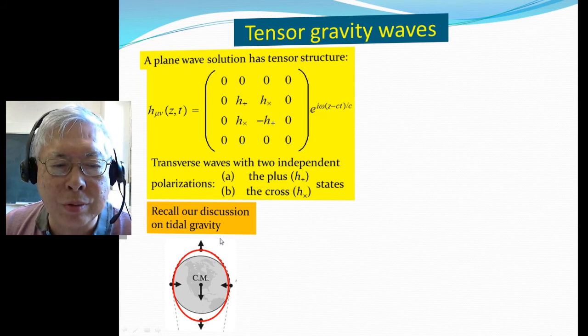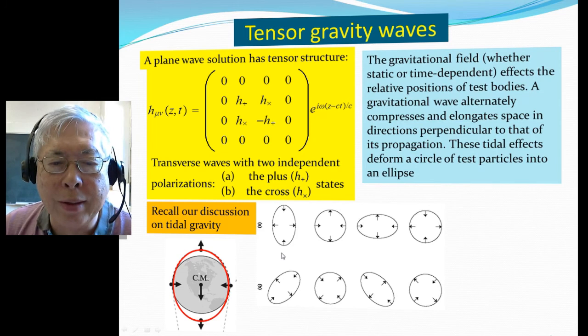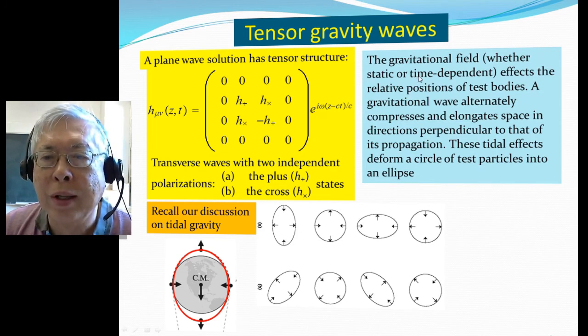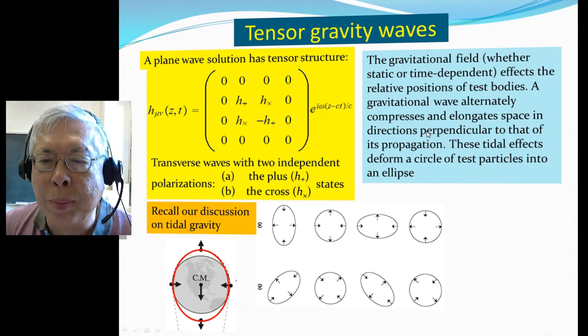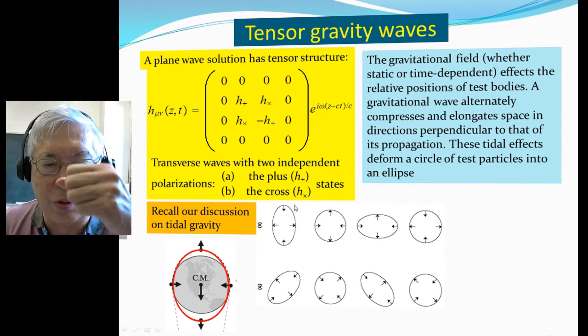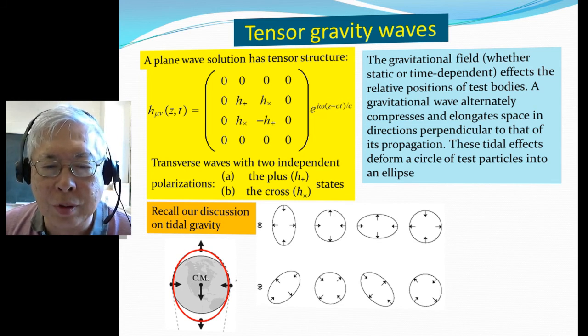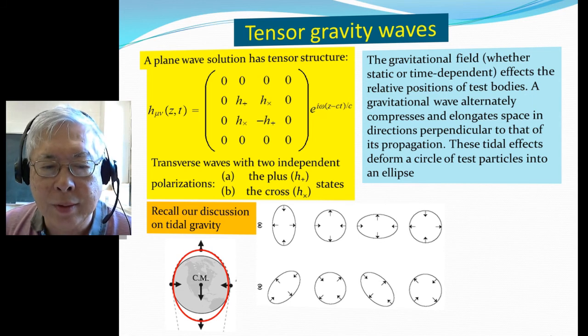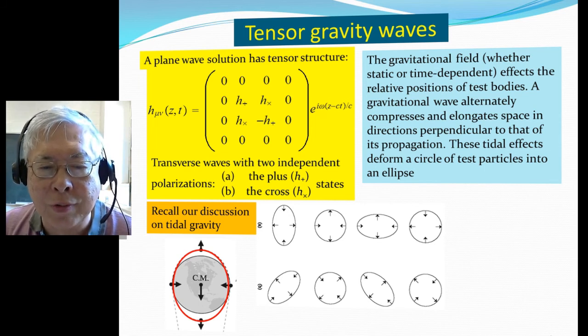Remember we talked about tidal gravity: you have longitudinal stretching and transverse compressions. Same way, if you talk about the effect of gravitational waves acting on test particles, it will alternately compress and elongate the space direction, perpendicular to the transverse wave. These tidal effects will deform a circle of test particles into ellipses. The first line is for the plus polarization, and the second line for the cross polarization. Notice the similarity to the tidal effect we talked about previously.